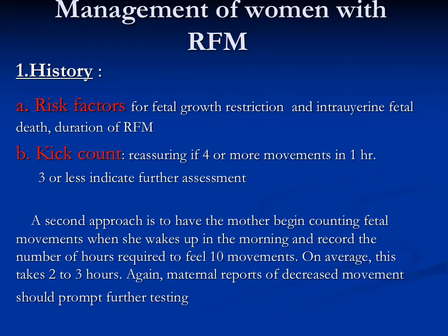Management of women with reduced fetal movement: first, by history we look for risk factors — for example, any risk factor for fetal growth restriction or intrauterine fetal death. Is the mother hypertensive, diabetic, post-term, or does she have a bad obstetric history such as prior fetal death? These should be taken into consideration.